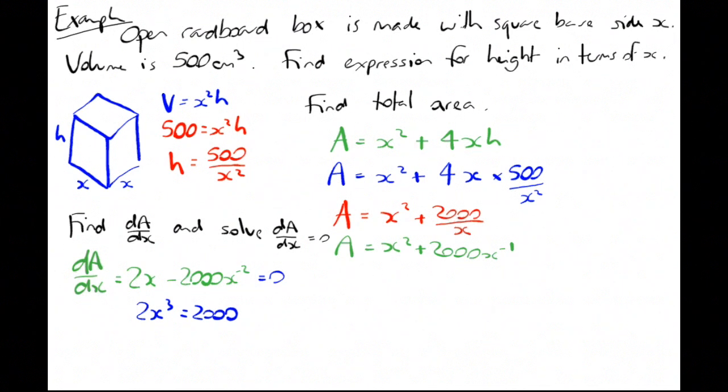We'll multiply through by x² and move that 2000 across the other side. I get 2x³ = 2000. Divide through by the 2, x³ = 1000, x = 10.